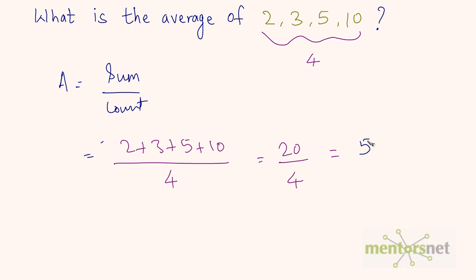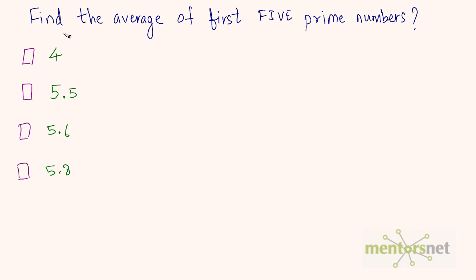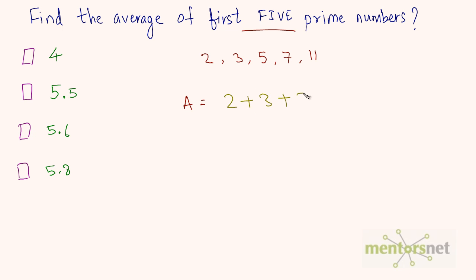Now a question for you: find the average of the first 5 prime numbers. The first 5 prime numbers are 2, 3, 5, 7, and 11. Average = (2 + 3 + 5 + 7 + 11) / 5. Adding them: 2+3=5, +5=10, +7=17, +11=28. So we get 28 / 5.